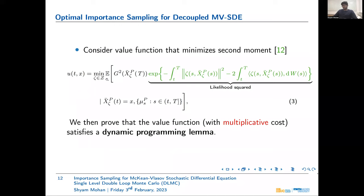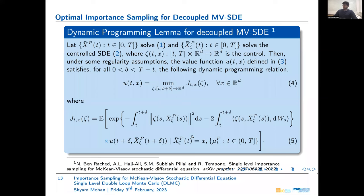The value function is the solution to the minimization problem of the second moment, given by G squared times the likelihood squared, where the likelihood comes from Girsanov's theorem for measure change of standard SDEs. We prove that this value function satisfies a dynamic programming lemma. In standard optimal control theory the value function has the form of running cost plus terminal cost, but here the cost structure is multiplicative — running cost times terminal cost — so we prove a dynamic programming lemma for this multiplicative structure.